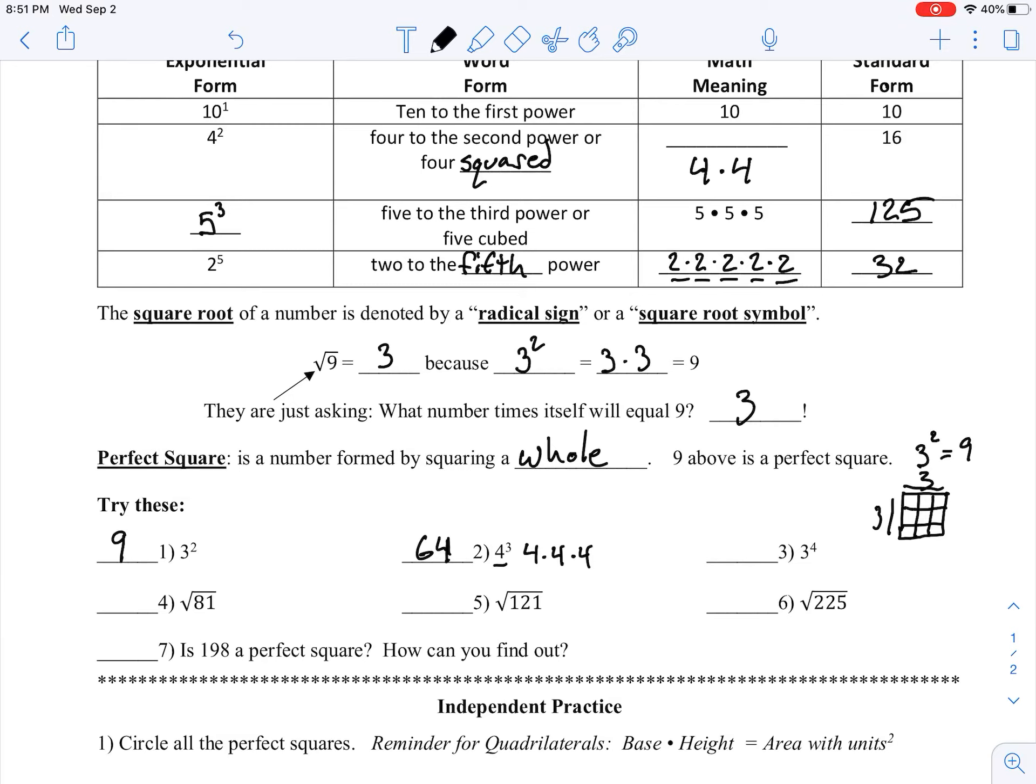Next we have 3 to the 4th power, so we're taking our base of 3 and multiplying it together 4 times. So 3 times 3 is going to give us 9, 9 times 3 will be 27, and then 27 times that last 3 is going to give us 81.